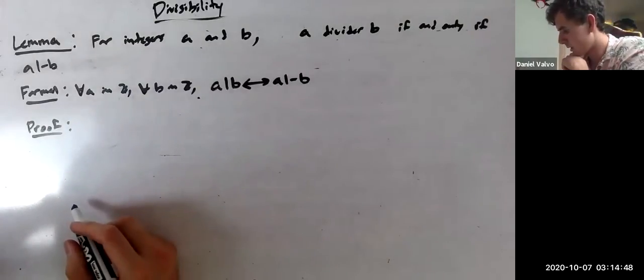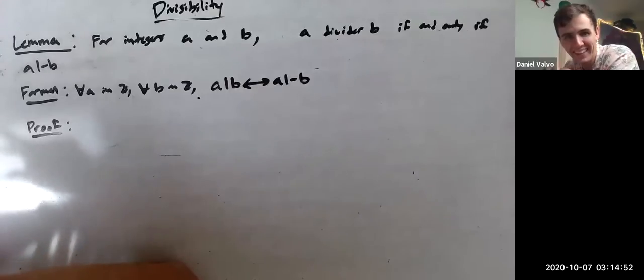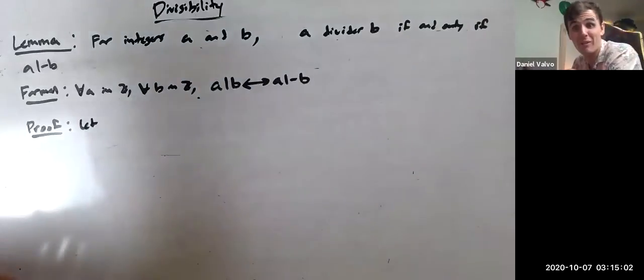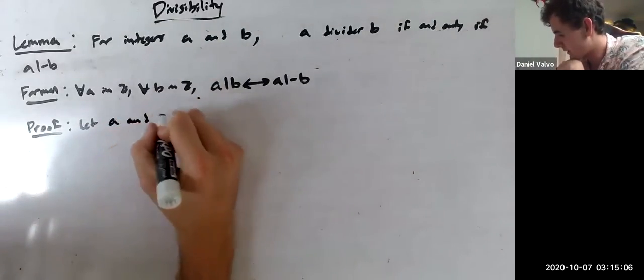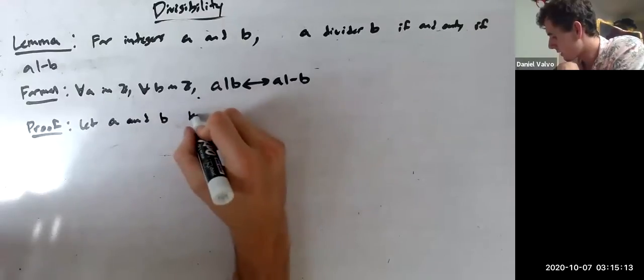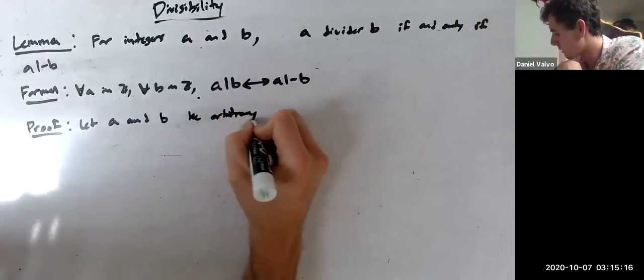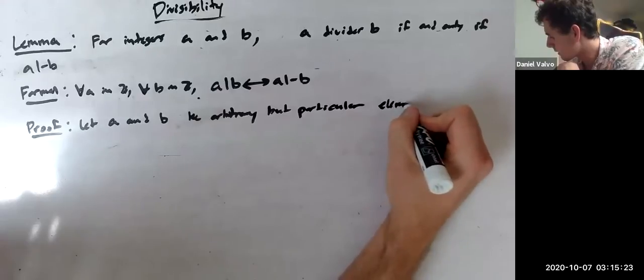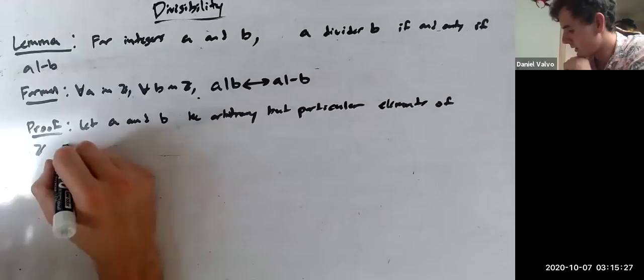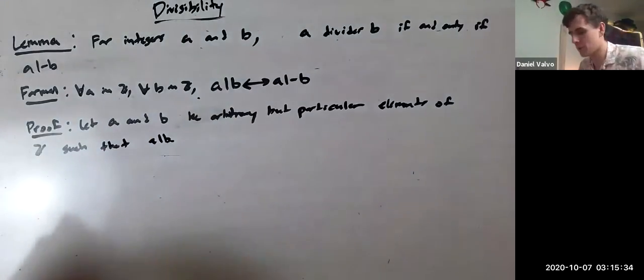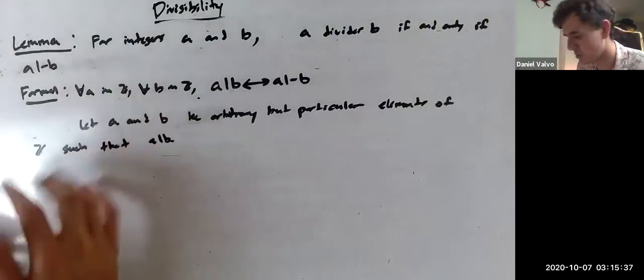Proof. So how do we start with proof? Let A and B. We have to generalize. There we go. Generalize. That's a good way to say it, right? Exactly. Let A and B be arbitrary but particular elements of Z such that A divides B. And by the way, I forgot something.